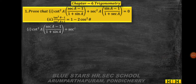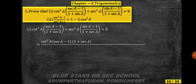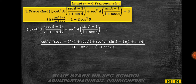First subdivision: cot²a · (sec a − 1) / (1 + sin a) + sec²a · (sin a − 1) / (1 + sec a) = 0. Taking common denominator: cot²a · (sec a − 1)(1 + sec a) + sec²a · (sin a − 1)(1 + sin a), all divided by (1 + sin a)(1 + sec a).